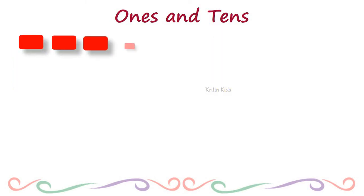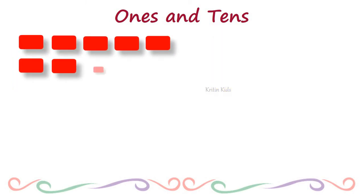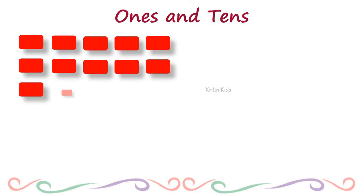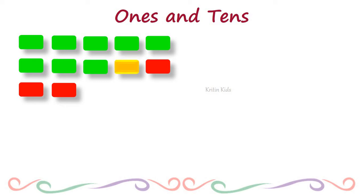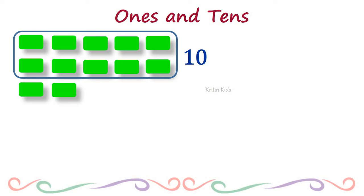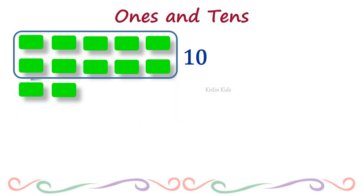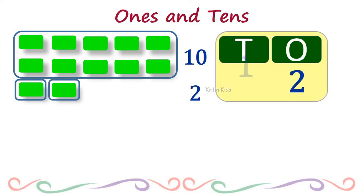Let's take one more example. Here we have a few more blocks. Count them: 1, 2, 3, 4, 5, 6, 7, 8, 9, 10. Ten blocks we can put in the block of 10, and these two remaining blocks we cannot put in a block of 10. We have to use two 1s blocks. So the number here: in 1s we have 2 blocks and in 10s we have only 1 block. So it is 12.